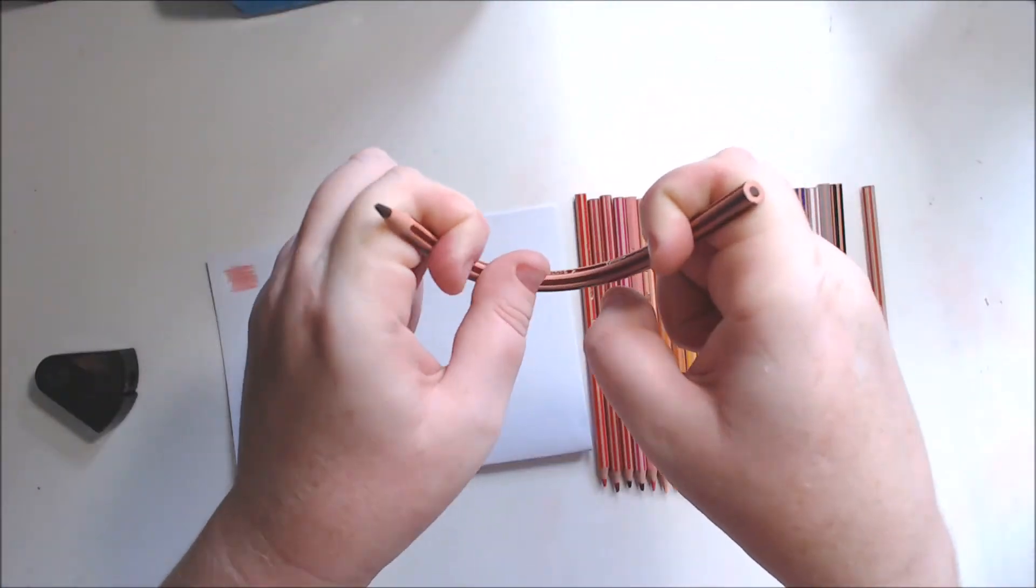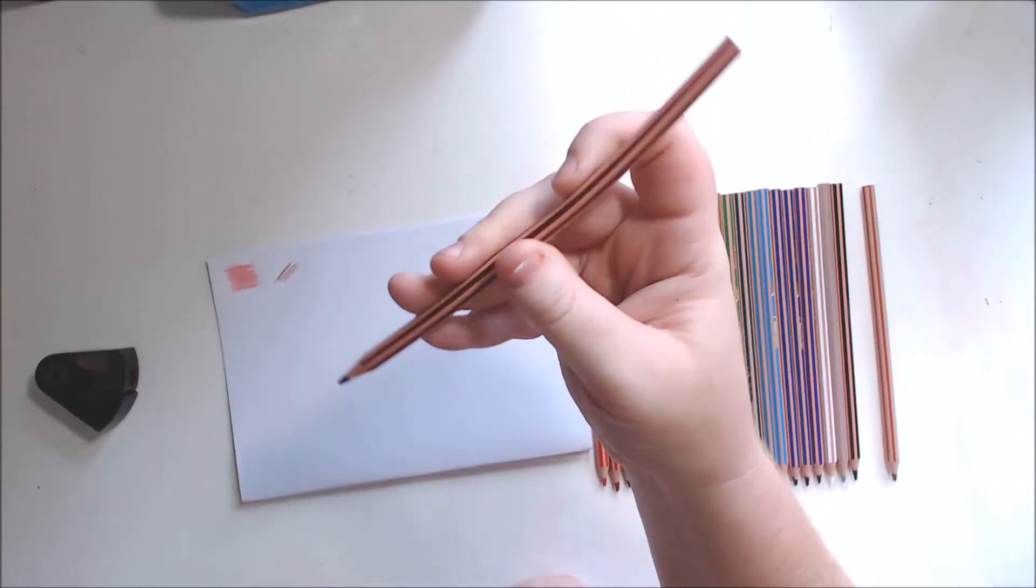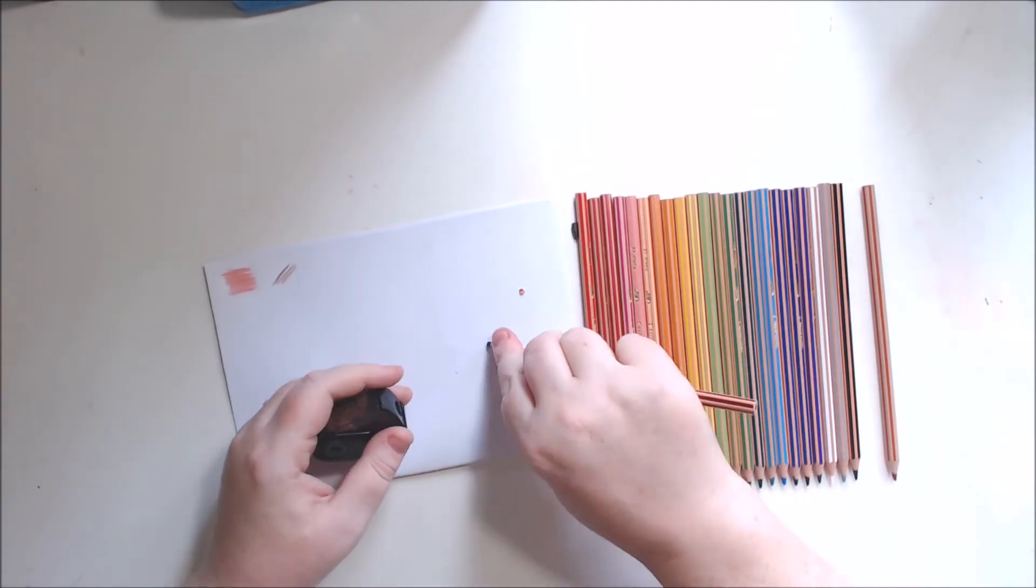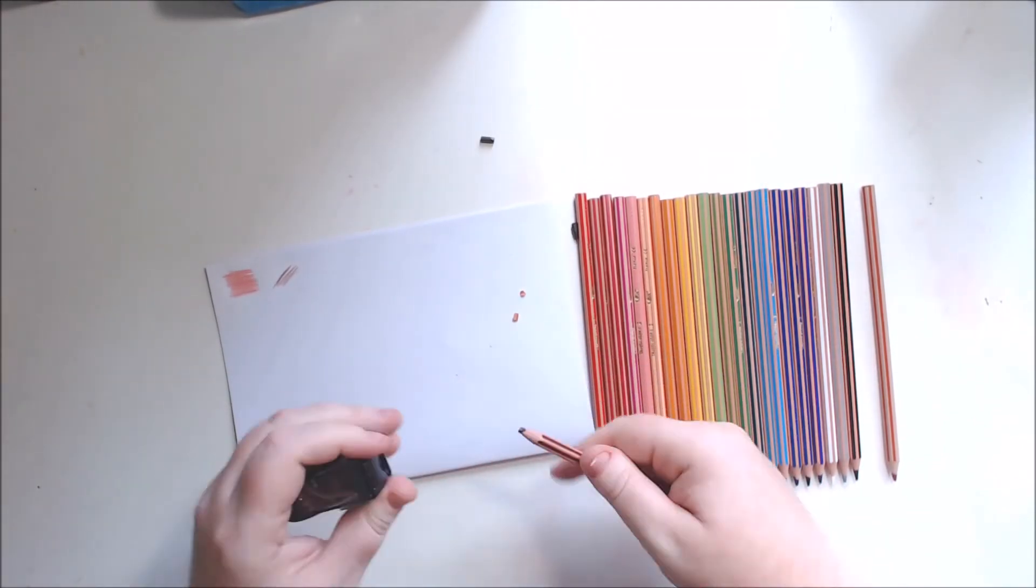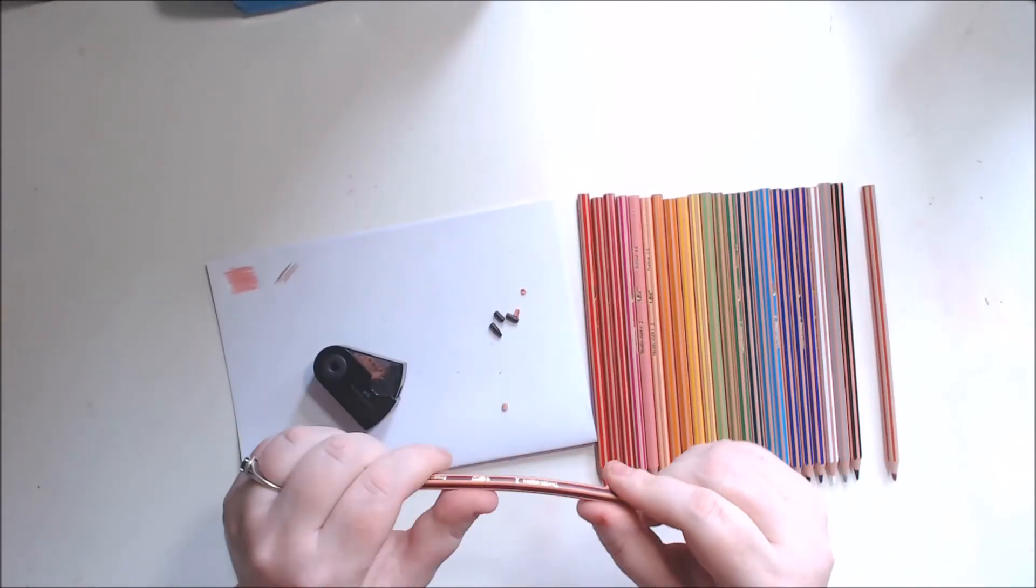I passed this pencil to my partner and he was able to snap it. He was able to bend it into a circle and then it snapped. So I've never been able to snap a pencil, but these just bend and bend and bend until they become so weak they break.